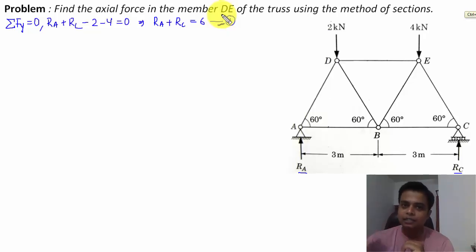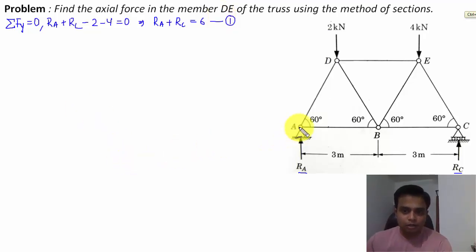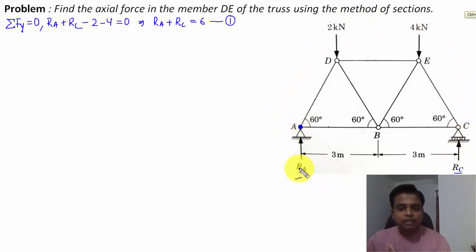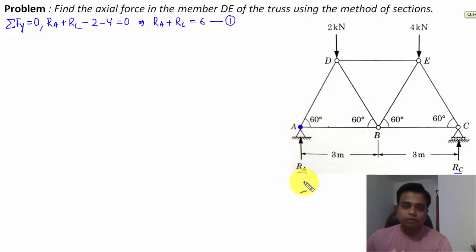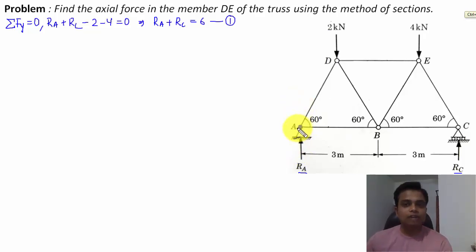With one equation you can solve only one unknown, but we have two unknowns — RA and RC — so we need one more equation. We'll take the moment about point A. In this arrangement there are four forces acting: RA, RC, 4 kN, and 2 kN. When we take the moment about point A, force RA passes through that point, so its moment is zero. We are left with three forces: 2 kN, 4 kN, and RC.